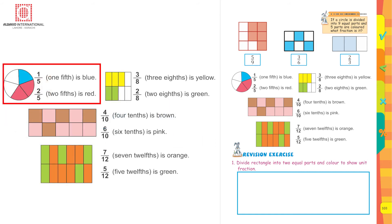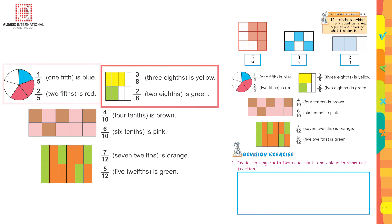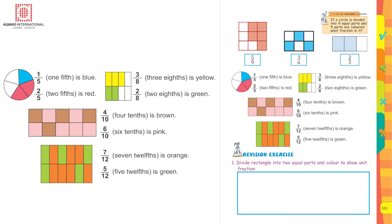There is a circle where one-fifth is blue and two-fifths is red. In the next picture, three-eighths is yellow and two-eighths is green. This means the picture is divided into eight equal parts: three are colored yellow — written as three upon eight — and two are green — written as two upon eight. Now do the rest of the questions yourself.